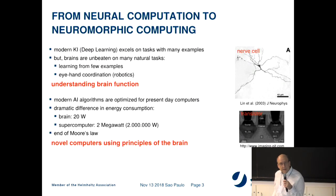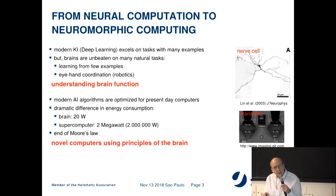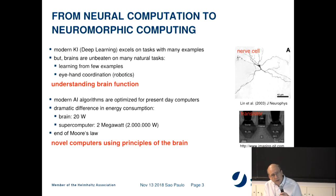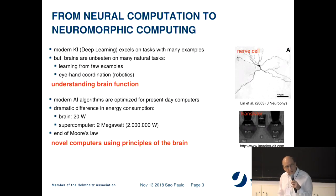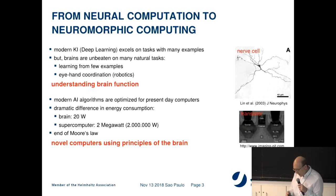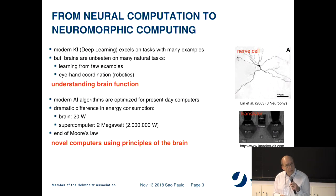These two aspects raise the question: is there any hope that we can achieve this? Here you see a photo of a stained nerve cell with a scale bar showing the cell body has about a diameter of 20 micrometers. Below this is a photograph of a modern transistor with a scale bar of 20 nanometers, meaning that the structures we can produce in technology are three orders of magnitude smaller than the relevant structures in the brain. So the size of the brain structures does not seem to pose a problem.